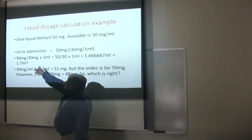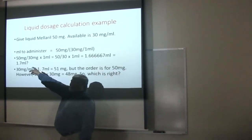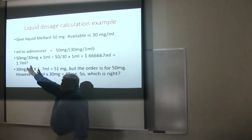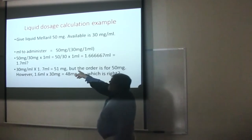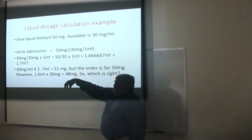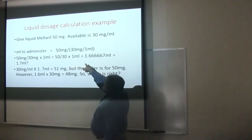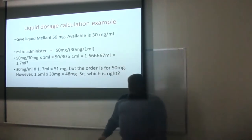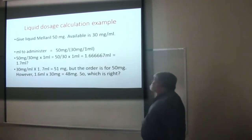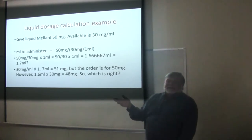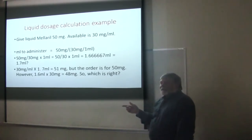30 into 50: the milligrams drop out, you get 30 into 50 times 1 mL, because the 30 is per 1 mL, and you end up with 1.6667 — a repeating decimal. We know we have to give approximately 1.67 mLs of the Mellaril so they will get their 50 milligrams.